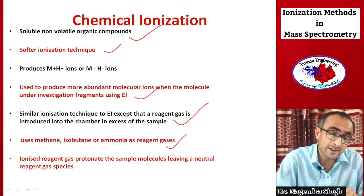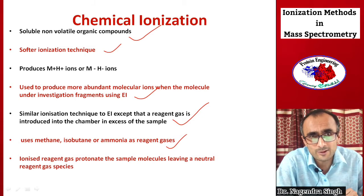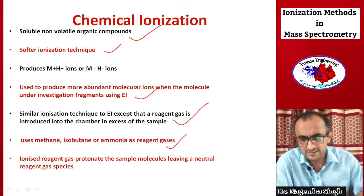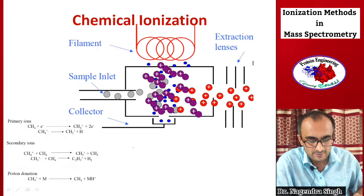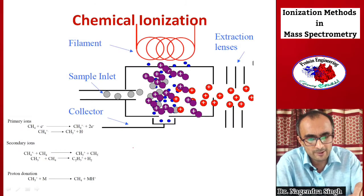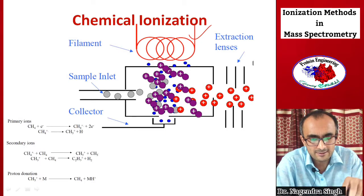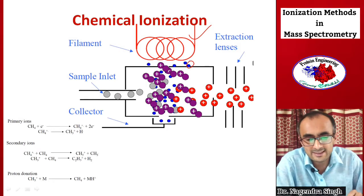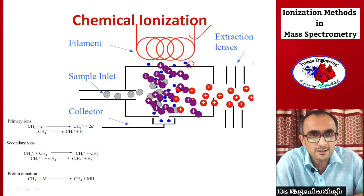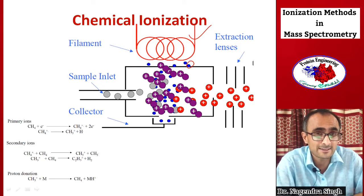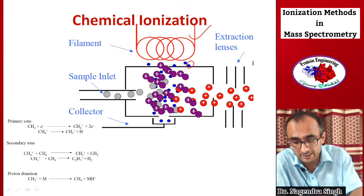In chemical ionization, the setup is otherwise similar to electron impact: a heated filament liberates electrons. Additionally, a gas like methane is introduced. When electrons collide with methane, they produce methane primary ions (CH₄⁺). These primary ions react together to form secondary ions, which eventually protonate the analyte molecules in order to give them a positive charge.